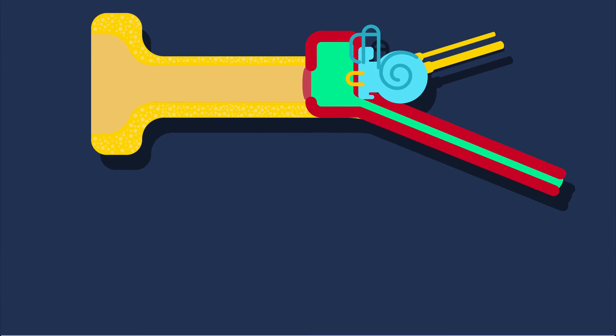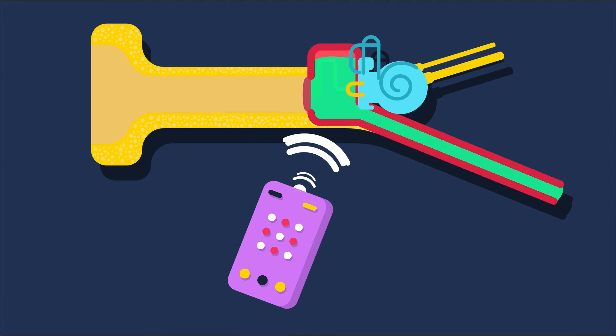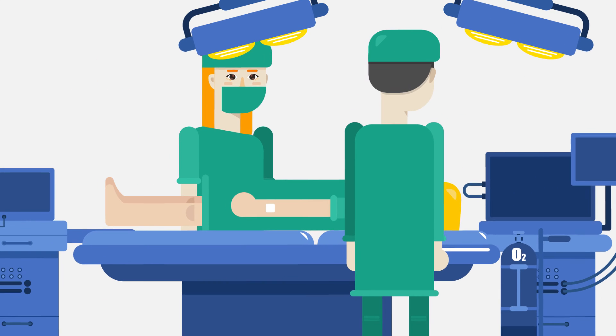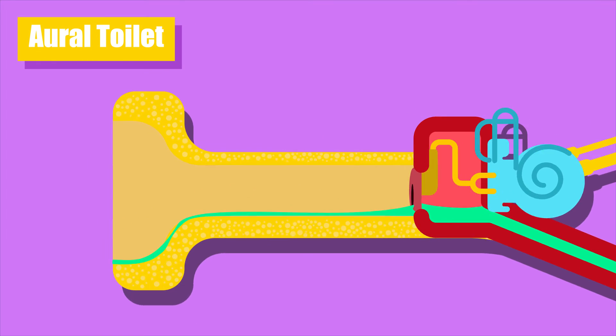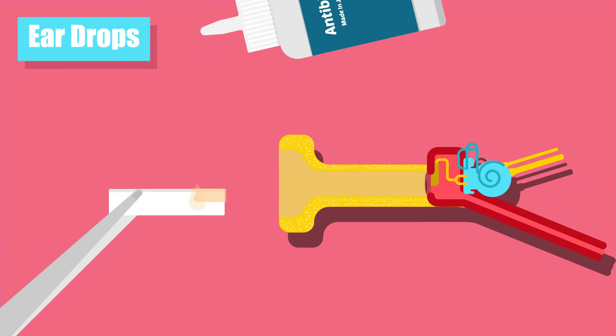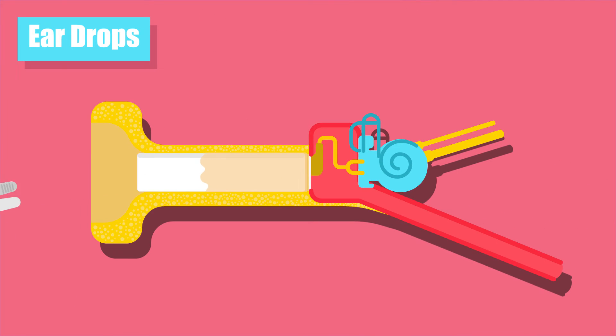Treatment aims to control infection and eliminate ear discharge and, at a later stage, to correct hearing loss by surgical means. Aural toilet removes all discharge and debris from the ear. Antibiotic ear drops are used, combined with steroids which have local anti-inflammatory effect.